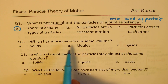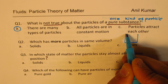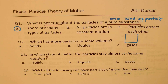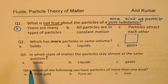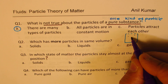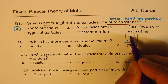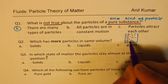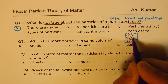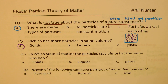Question two: Which has more particles in the same volume? As you know, as far as gases are concerned, particles are far apart, so gases will have very few. As far as liquids are concerned, they are compact. But as far as solids are concerned, they are very, very close — so you have much, much more particles if the same volume is occupied by a solid. So the answer is solids.